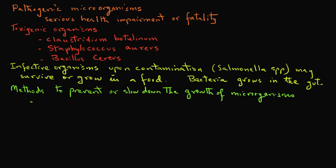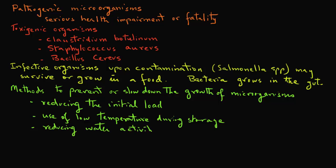Some of the common measures include reducing the initial load of microorganisms, use of low temperatures during storage, also reducing the water activity, lowering the pH, also, of course, the use of preservatives, as well as proper packaging can help in preventing or slowing down the growth of microorganisms.